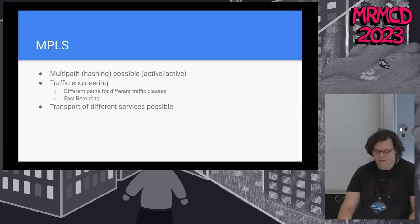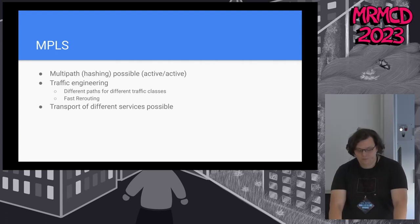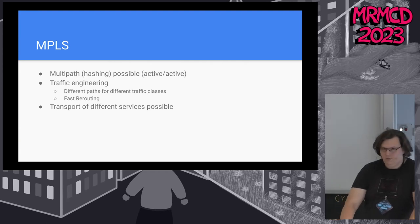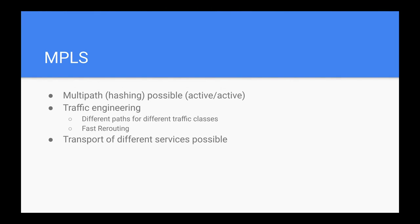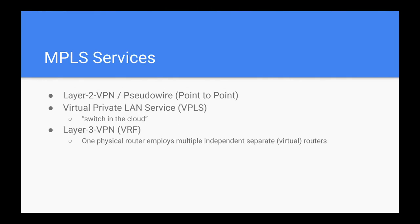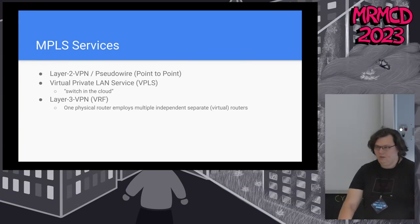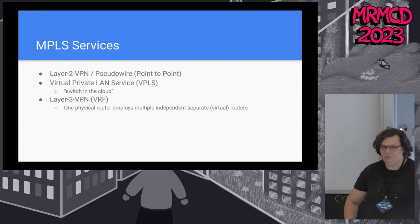I can use MPLS. The advantage when using MPLS is to use hashing, to use active-active paths, to do traffic engineering with different paths for different service classes. I have the possibility to do fast rerouting and can transport different services or different protocols. Services I can transport via MPLS are point-to-point links, plain switched Layer 2 networks — practically a big virtual switch — or VRFs, which results in having multiple independent virtual routers on a router. This is mostly done by telecommunication providers.